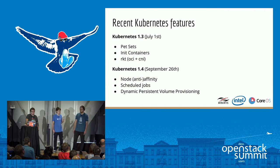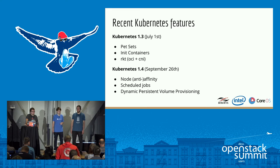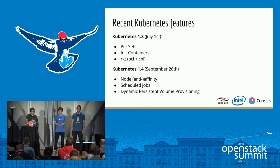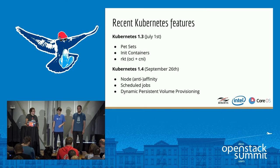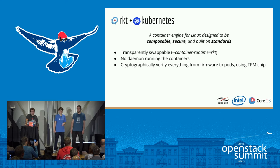Rocket is an alternative container engine built from the ground up for composability, security, and standards. You can start using it on Kubernetes with a single flag. It has the advantage that there's no daemon running the container, so no single point of failure, and you can live-update the engine. It also has advanced security features: you can run containers with simple chroot isolation, standard cgroups-based isolation, or even full virtualization.